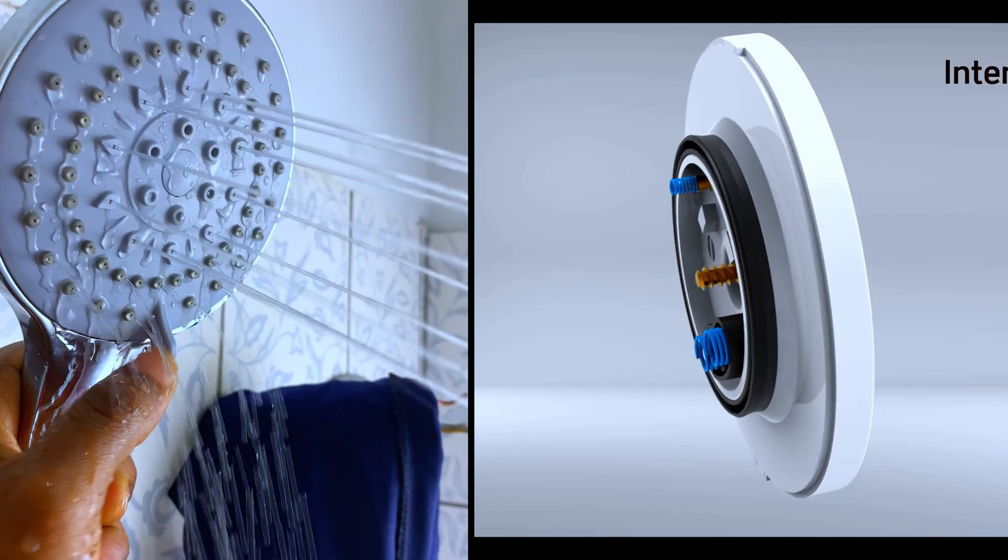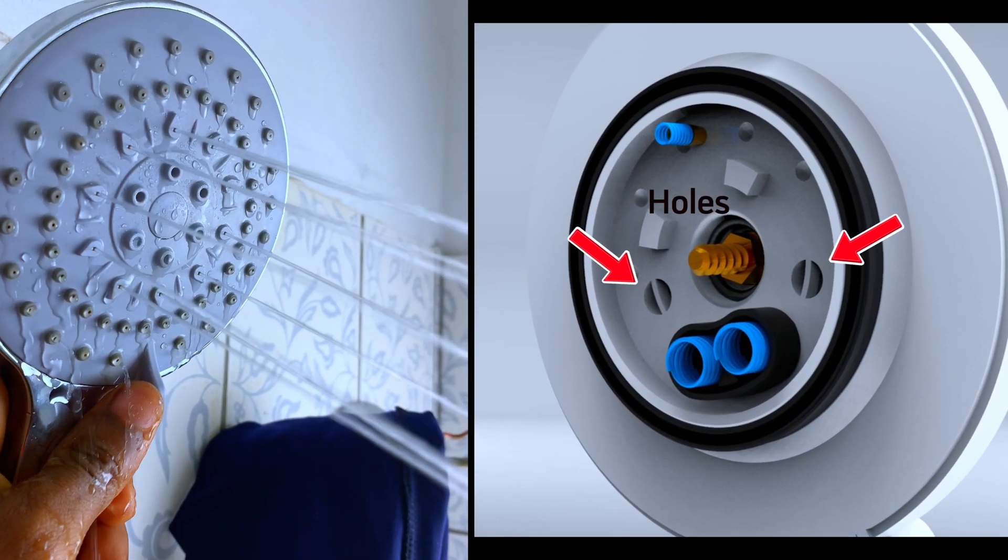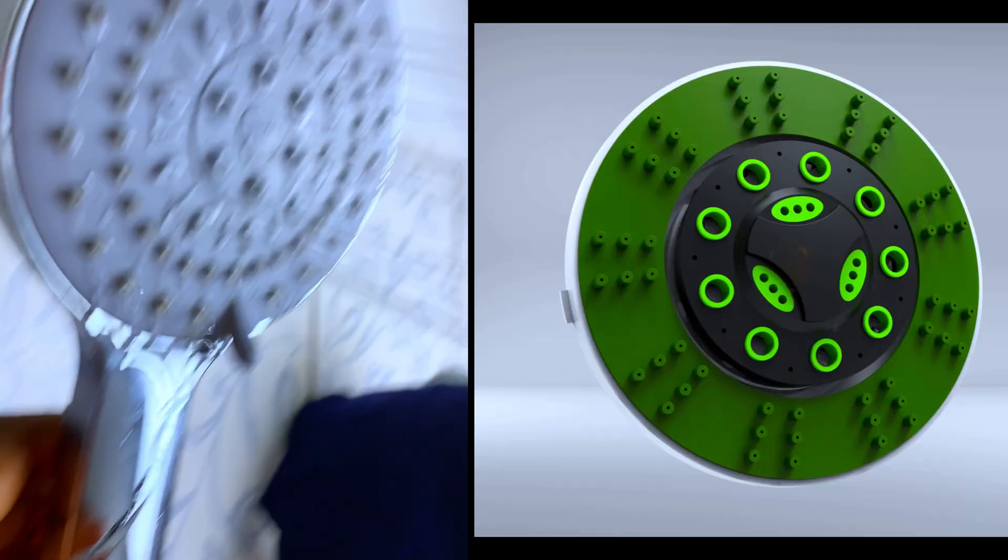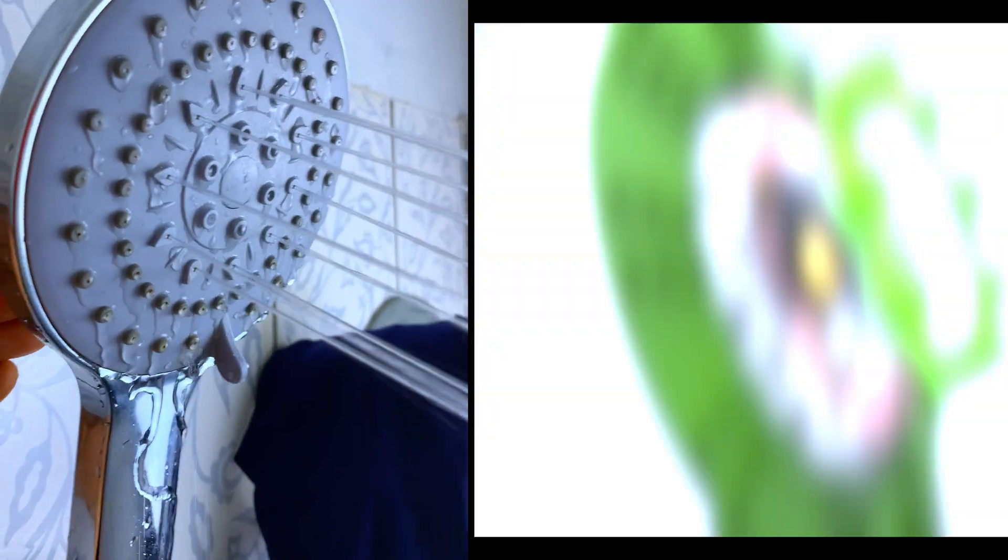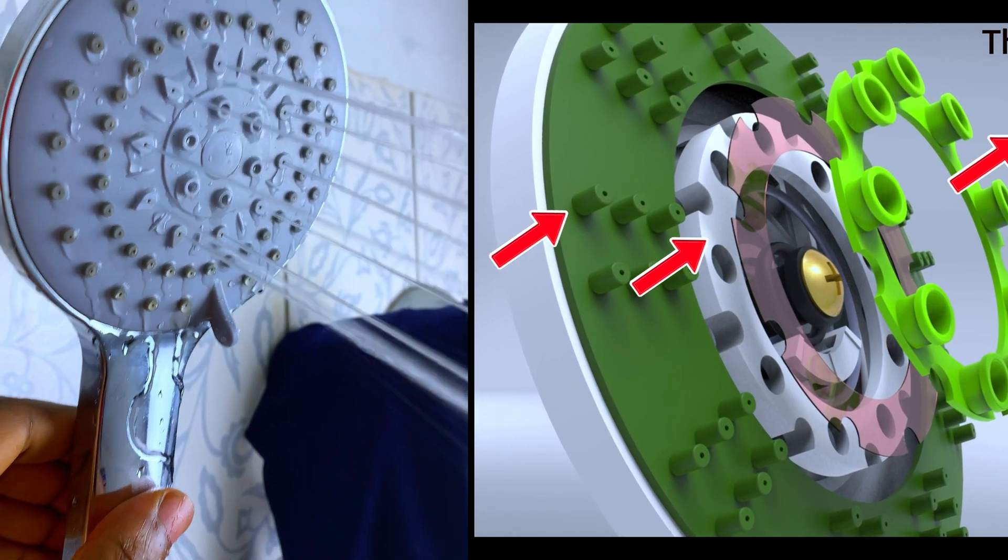Next we have the jet spray pattern. The diverter plate is positioned in such a way as to open only the central narrow nozzles, resulting in small amounts of water being forced through fewer openings, increasing the pressure. The overall effect is a powerful targeted water jet useful for rinsing off soap or shampoo quickly.